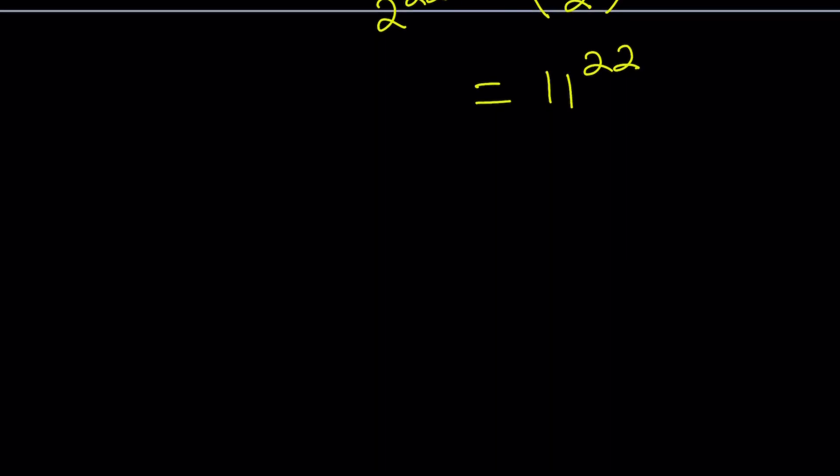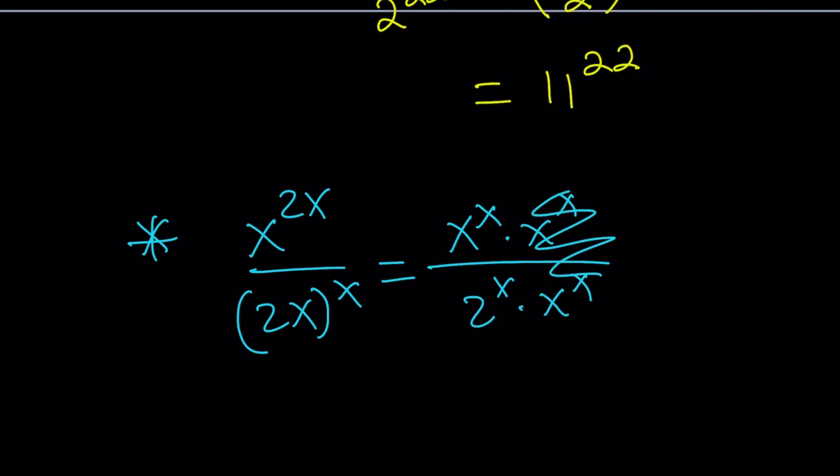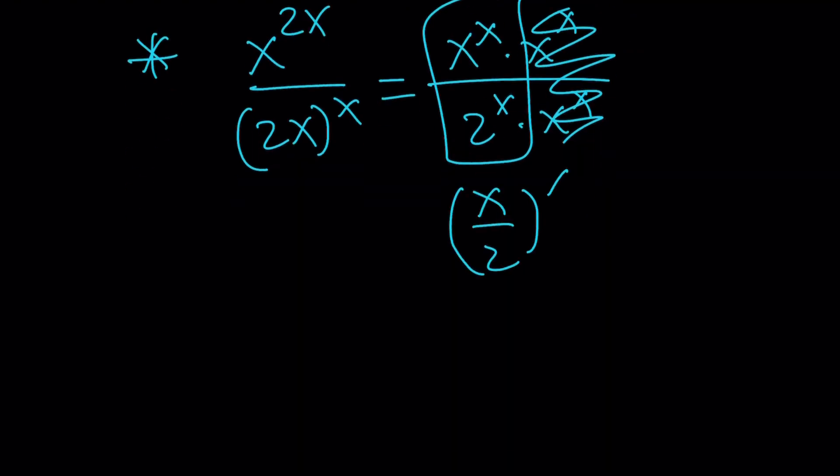What is the general method? We're looking at an expression like x to the power 2x divided by 2x to the power x. You can break this down in many ways. One is writing it as x to the power x times x to the power x divided by 2 to the power x times x to the power x. The x to the power x cancels out, leaving x over 2 to the power x. In this case, x equals 22, so half of 22 is 11. 11 to the power 22 will be the answer.